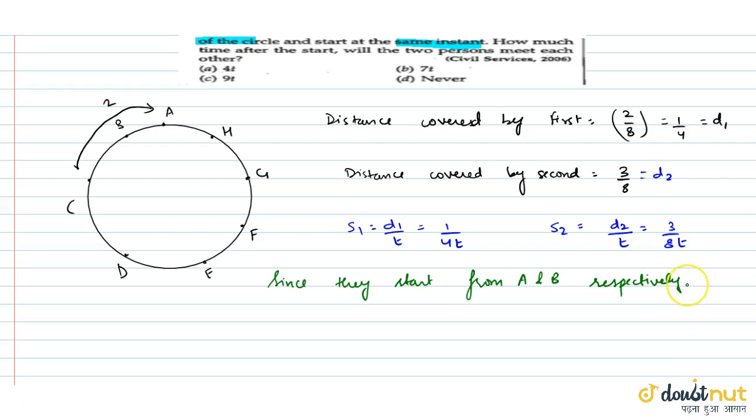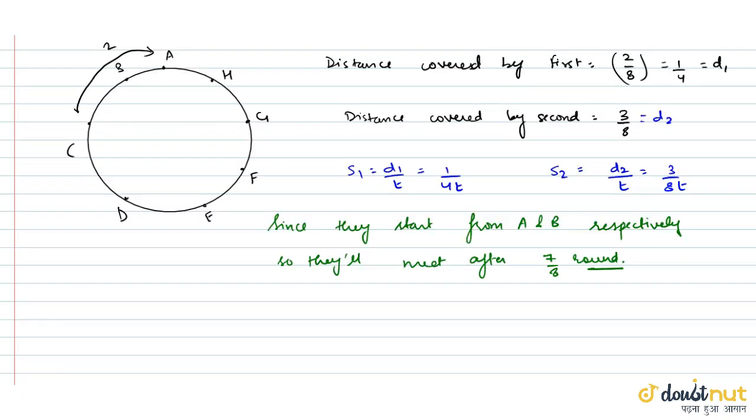That means ki ek round ka gap toh hamisha maintain rehna chahiye. So they'll meet after 7 by 8th round. Matlab ki agar ek round ka gap hona chahiye A or B ka toh baqi 7 jab woh dono complete karlinge tab woh meet karlinge.